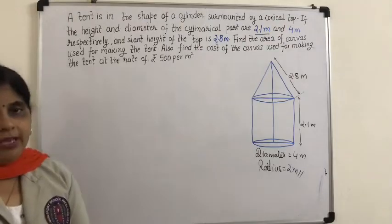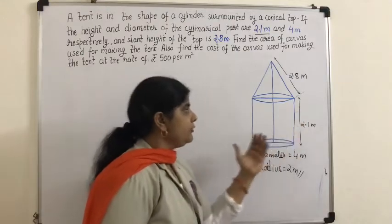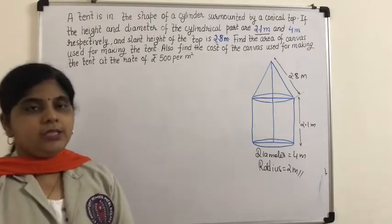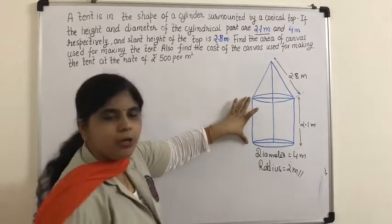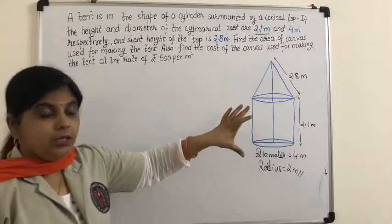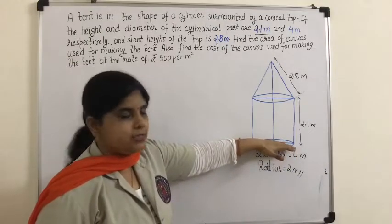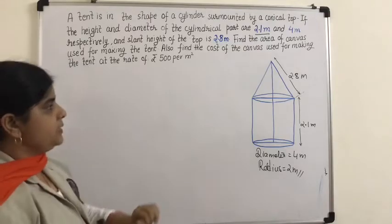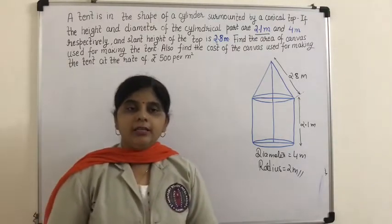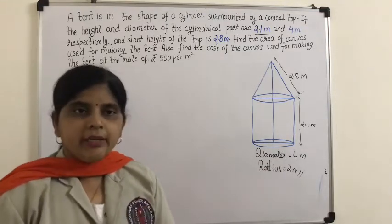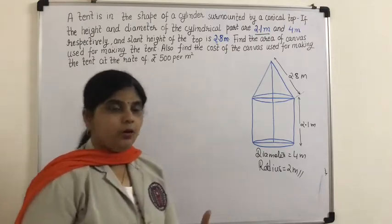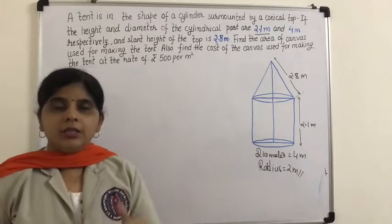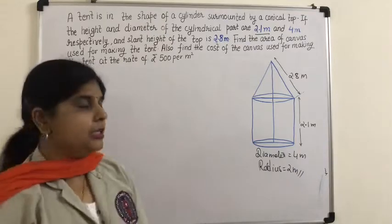To find the total area of canvas, we need to find the area of the cylindrical part. When talking about tent cloth — canvas — we need only the curved surface area, not the base. Similarly for the conical part, we need only the curved surface area. So the total area is the curved surface area of the cylinder plus the curved surface area of the cone.